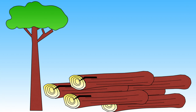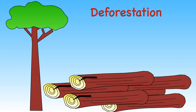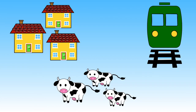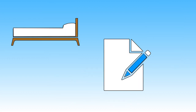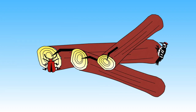Sadly, many of our woodlands and forests are shrinking or even disappearing. Trees are being chopped down to make space for new houses, train lines and farming. In some parts of the world, trees are even being chopped down for timber to make furniture and paper. As many animals depend on the forest and woods for places to hide and to find food, we need to do all we can to protect them.